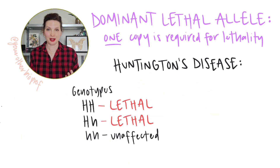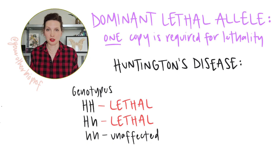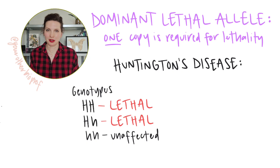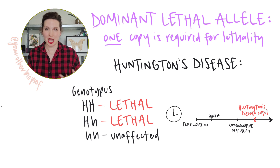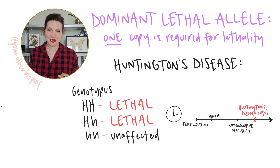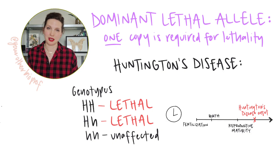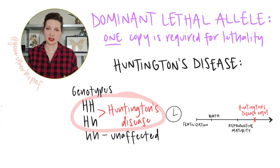Both of these apply to Huntington's disease in humans, a progressive neurodegenerative disorder where symptoms and lethality don't typically arise until an individual is in their forties or later, after which point they may have already had children and passed that Huntington's allele onto their offspring. And because Huntington's is a dominant lethal, a single copy of that disease allele can cause the disease symptoms and lethality.